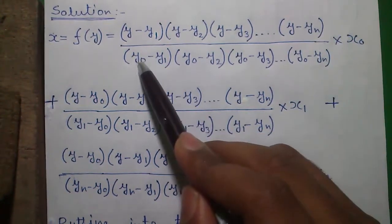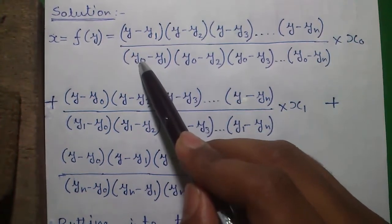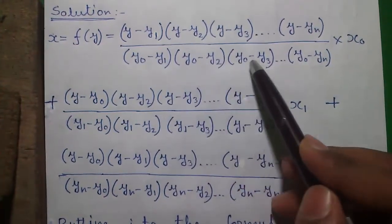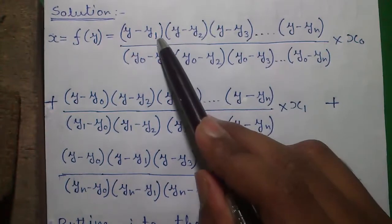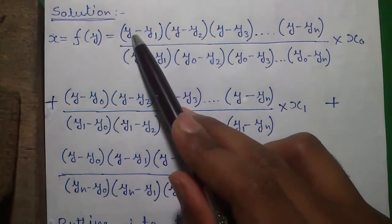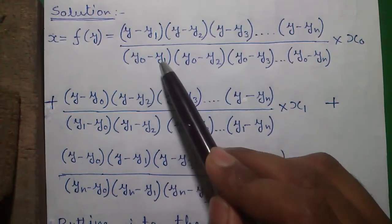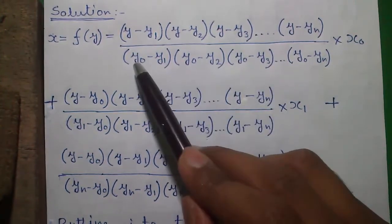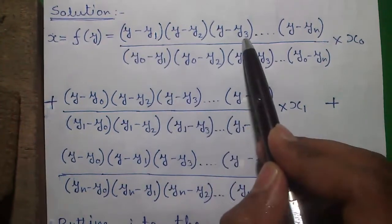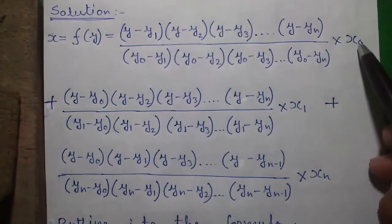In the denominator we will subtract everything from y0. So y0 minus y1, y0 minus y2, y0 minus y3. You see in the numerator we subtract y1, y2, y3 from y, and in the denominator we subtract y1, y2, y3 from y0. Since we are dealing with y0 in the first term, it is multiplied by x0.